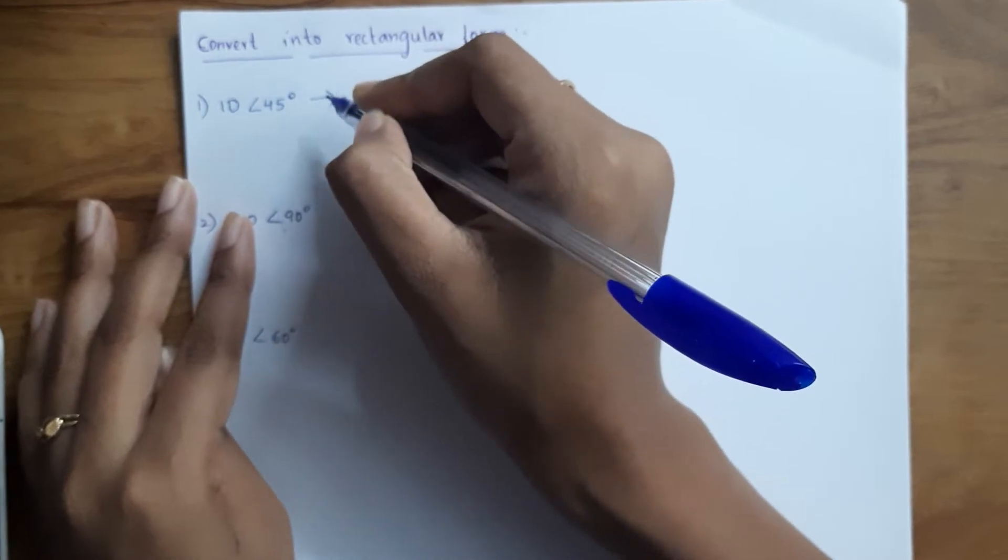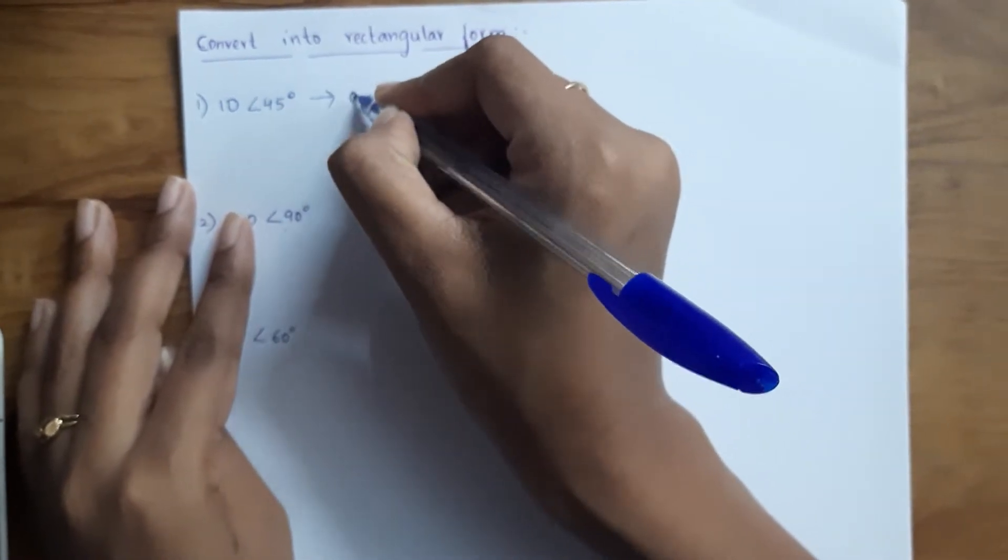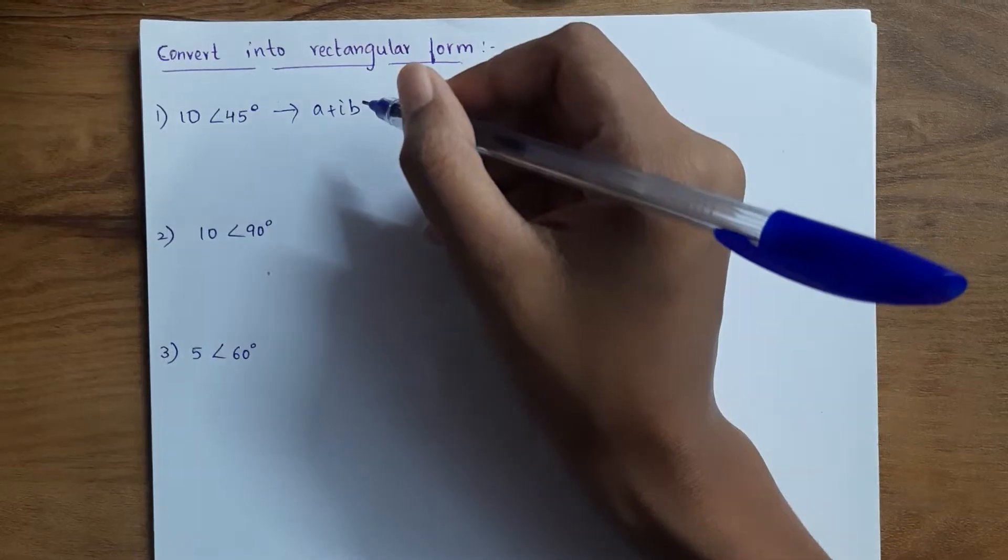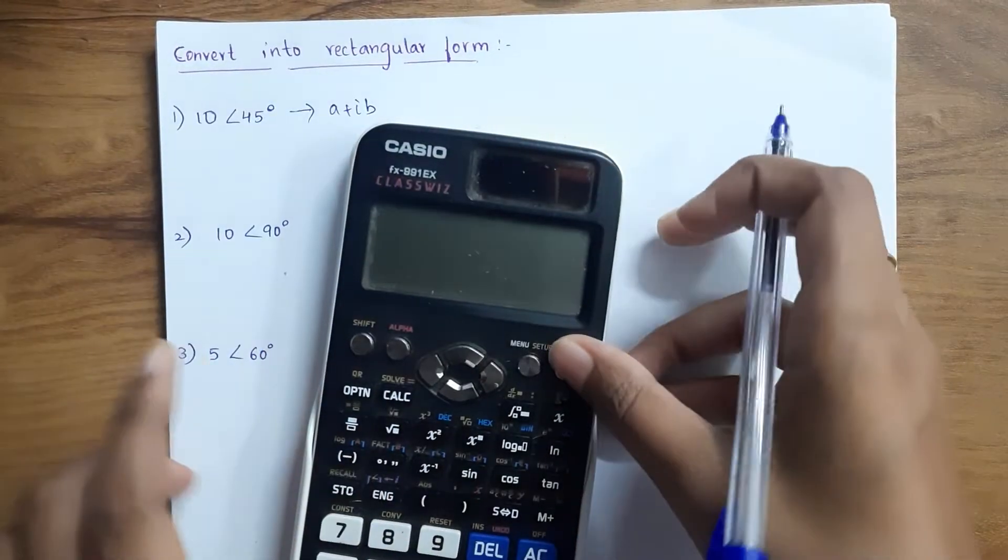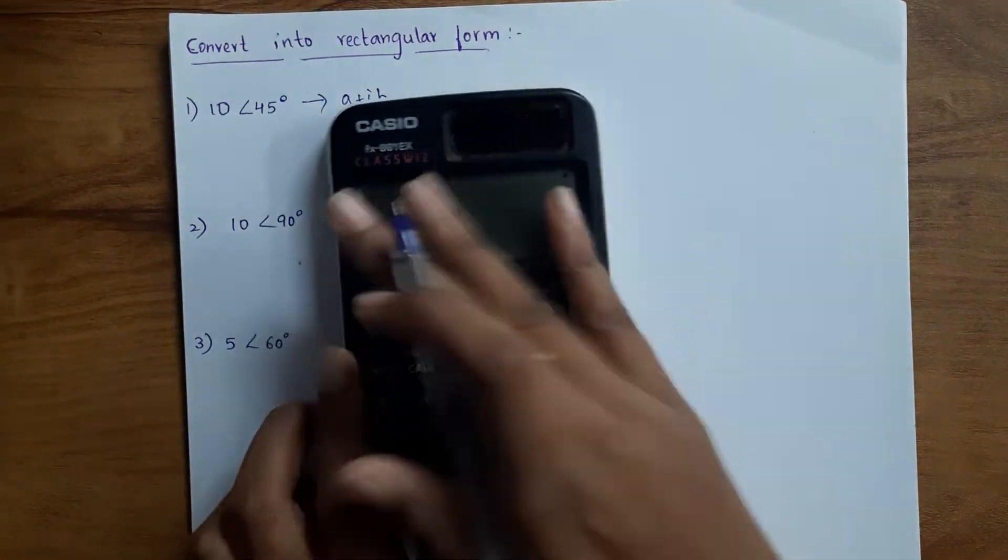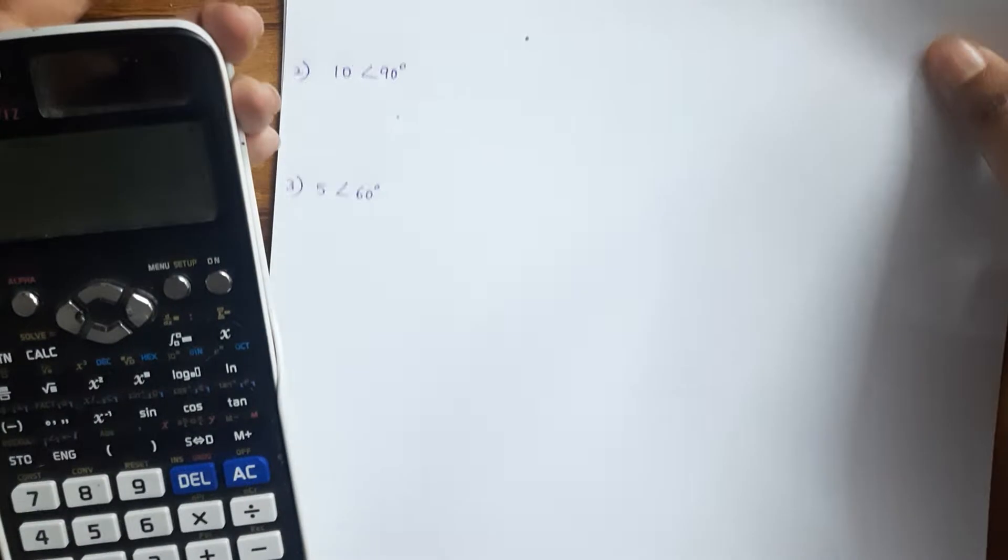We are going to see how to convert using our scientific calculator. So first, our question is 10, and here our angle is 45 degrees.